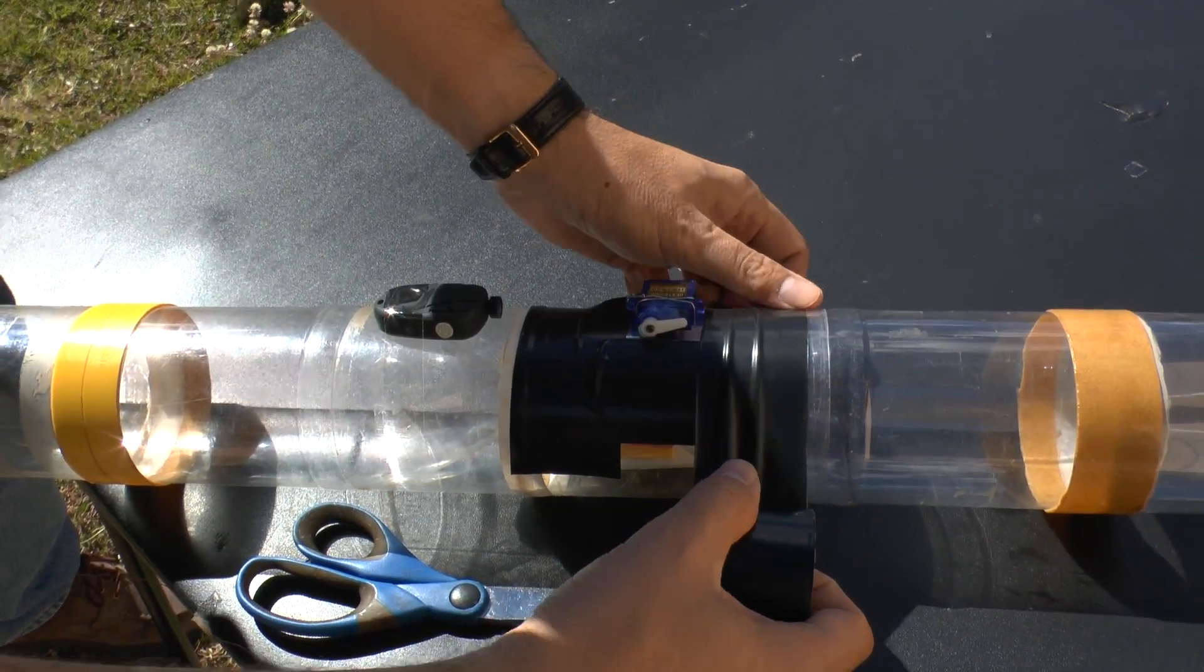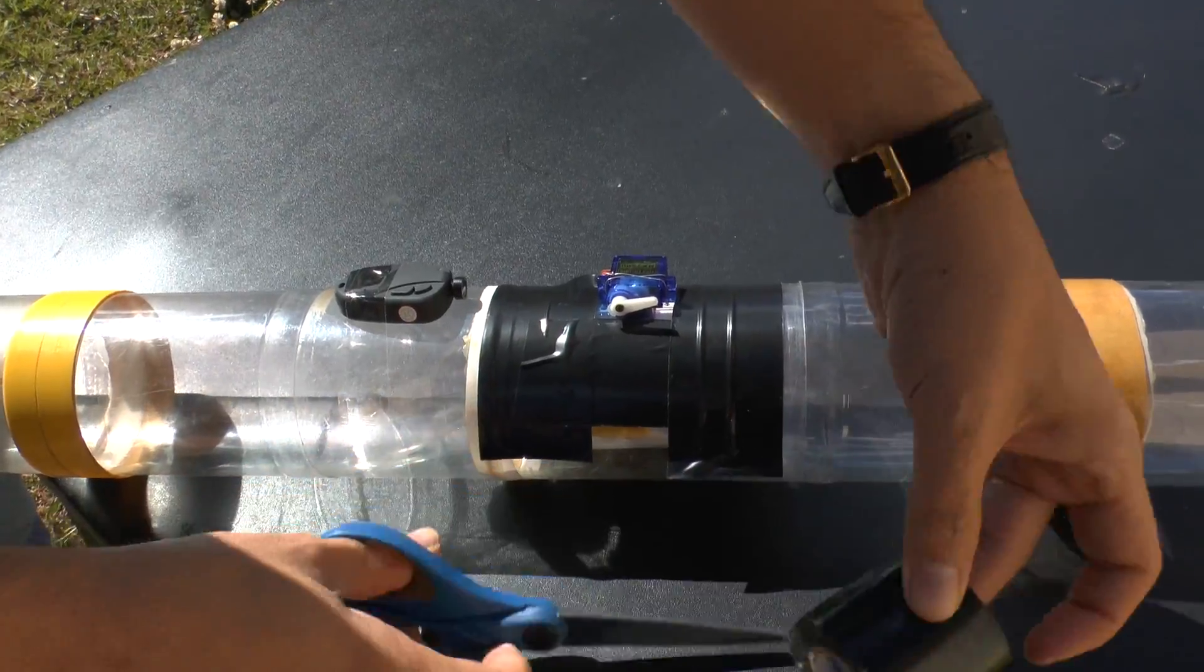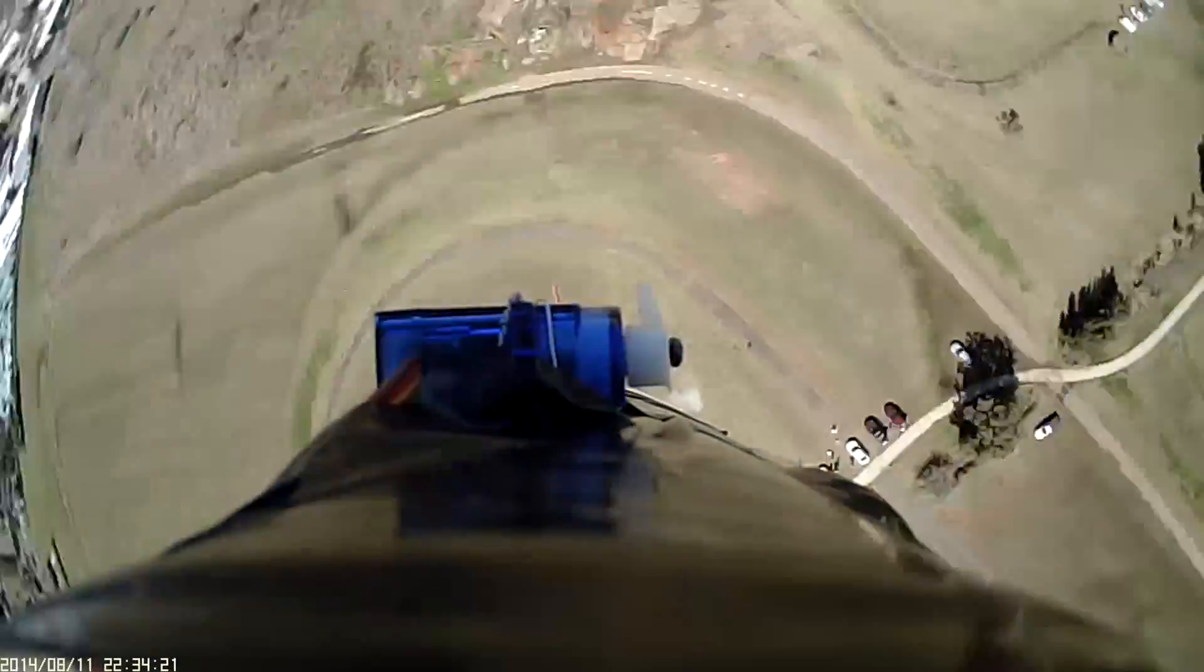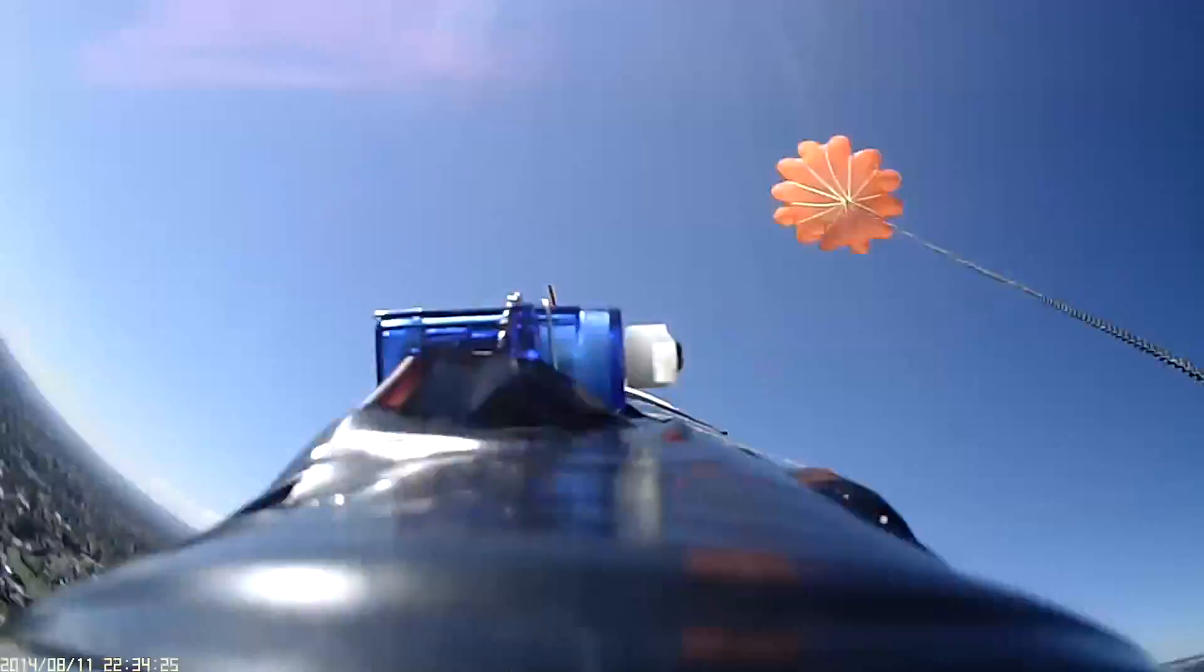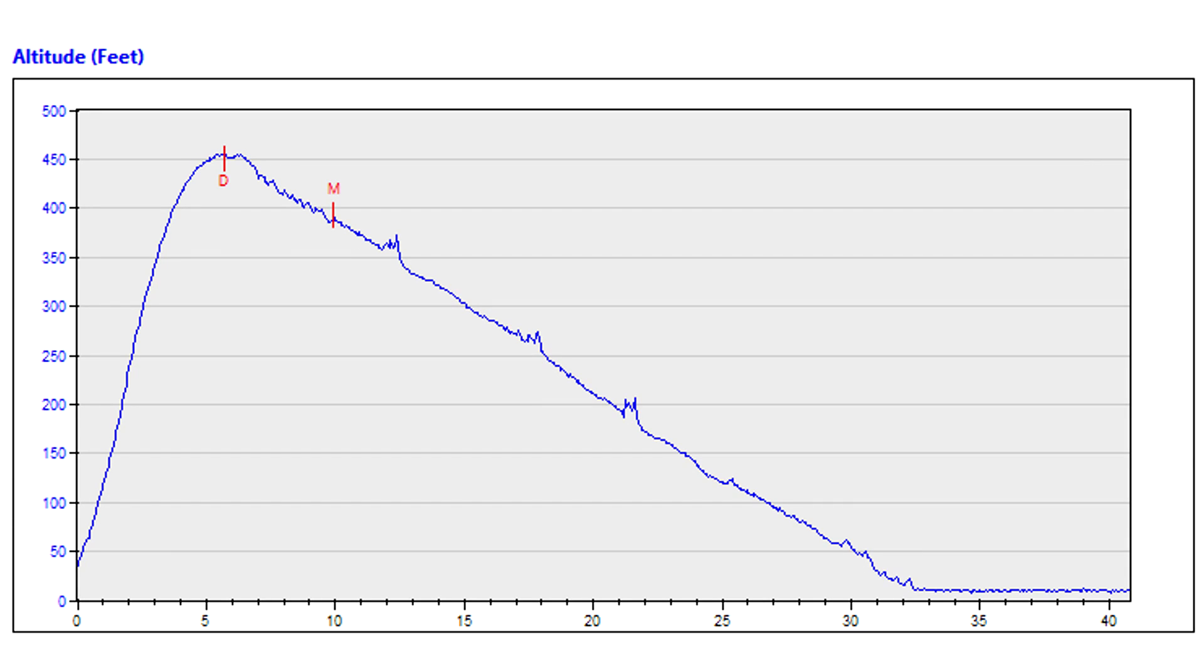The fix was pretty easy as we put black electrical tape on the fairing to block the sunlight and launched it again. This time the onboard video showed the servo motor activating right at apogee and the data was a lot cleaner.